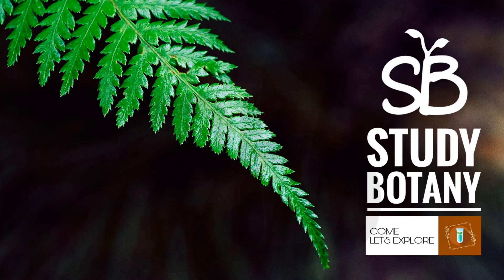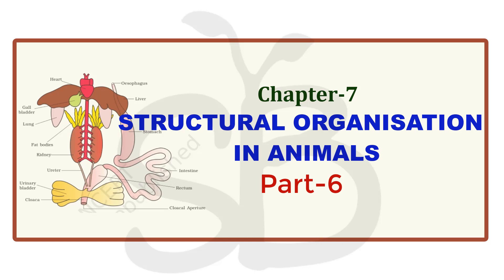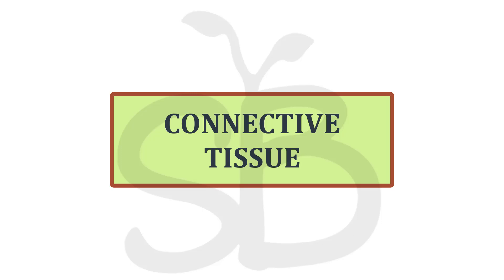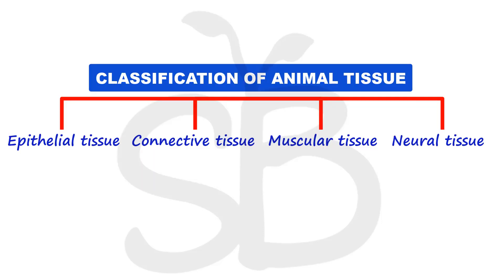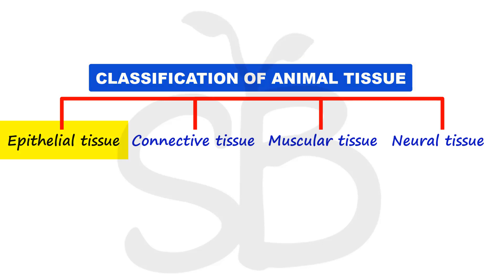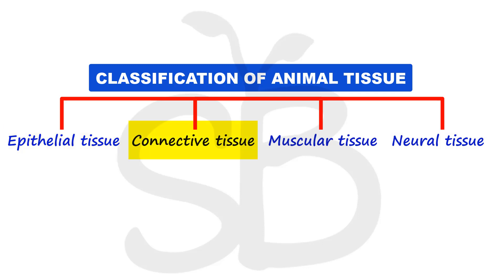Hello friends, welcome back to my channel Studybotny. Today we are going to discuss Plus One Biology Chapter 7, Structural Organization in Animals — that is the sixth part. In this video we are going to study animal tissue classifications: epithelial tissue, connective tissue, muscular tissue, and neural tissue.